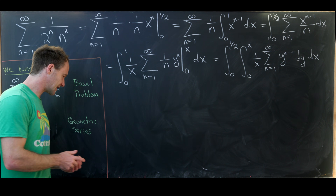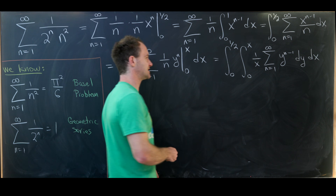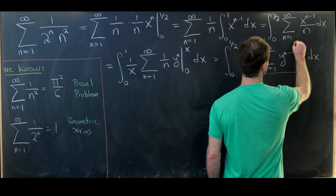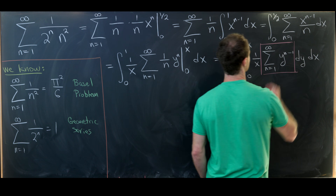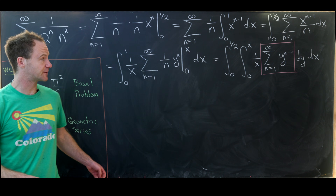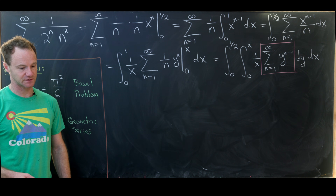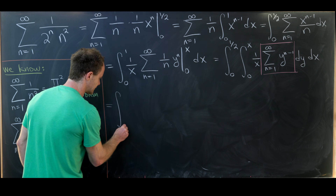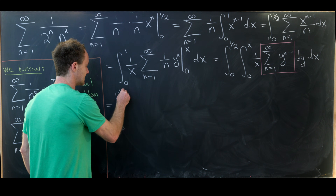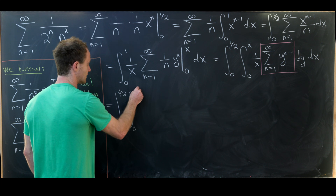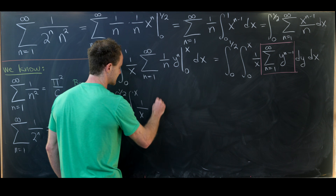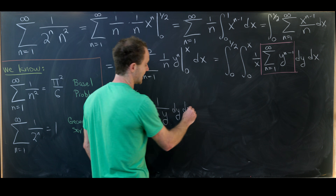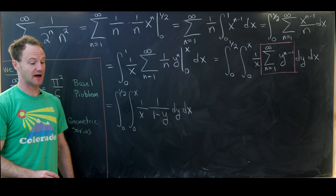Now let's notice that we've got a geometric series in here. The sum as n goes from 1 to infinity of y to the n minus 1 has the nice closed form 1 over 1 minus y. So this gives us the integral from 0 to half and then the integral from 0 to x of 1 over x times 1 over 1 minus y, dy dx.